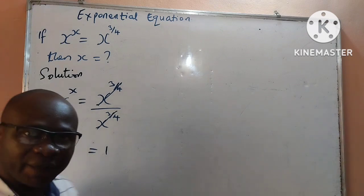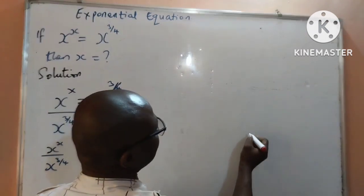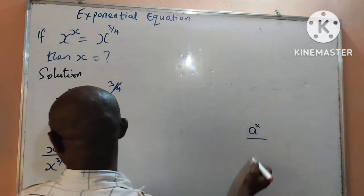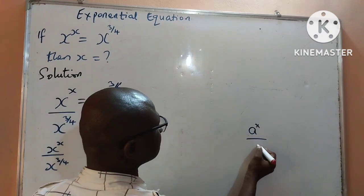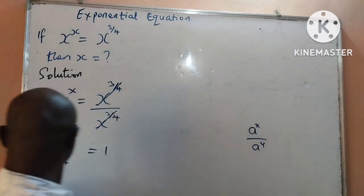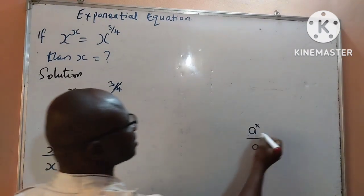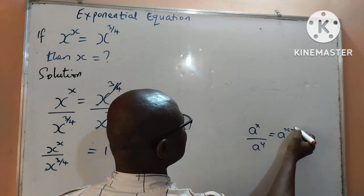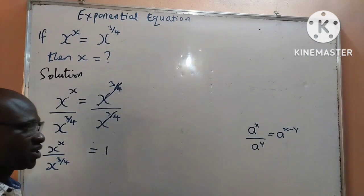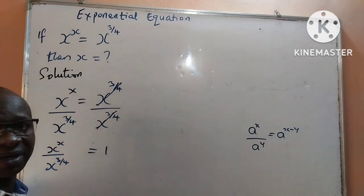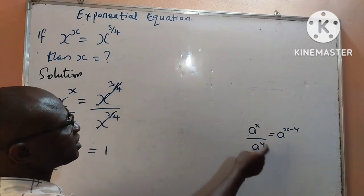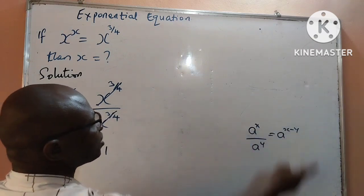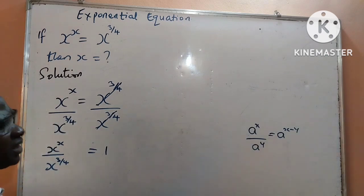By the law of indices, if I have a to the power of x all over a to the power of y, this is equal to a to the power of x minus y. This is the divisional law of indices — when the bases are the same and the terms are divided, we simply subtract the powers.